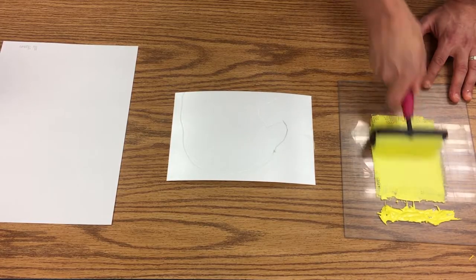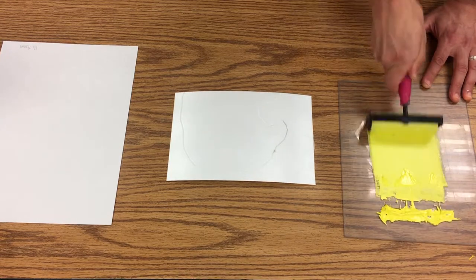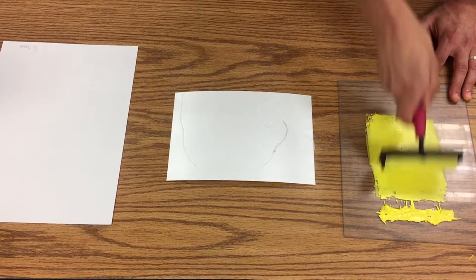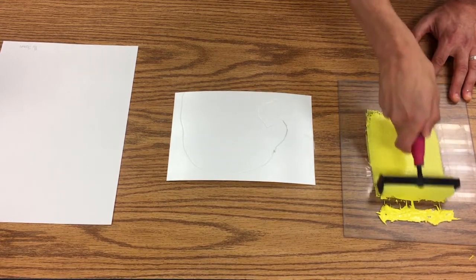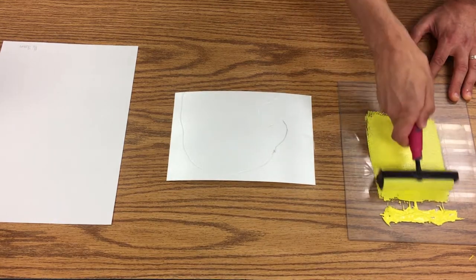I'm just kind of spreading it into this little rectangular area in the center. I don't want to spread it all around. When you start to hear that noise like velcro, that is the sign that you have enough ink on your printing plate.